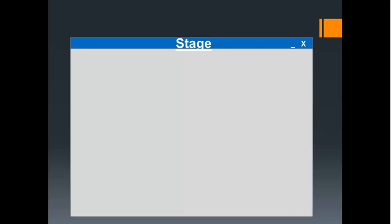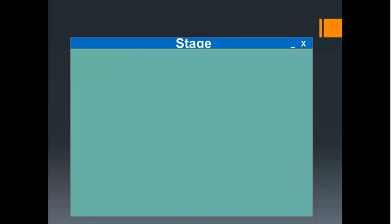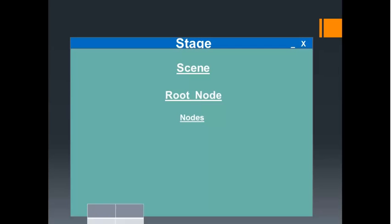In the first place, let's start with the basic organization of an application. Imagine that you have a window, and this window will be called a stage. This stage will have inside of it a scene. And a scene will be created out of a root node. A root node will be a node that will contain more components inside your application. And these components will be known as nodes. A node can be, for example, a pane.